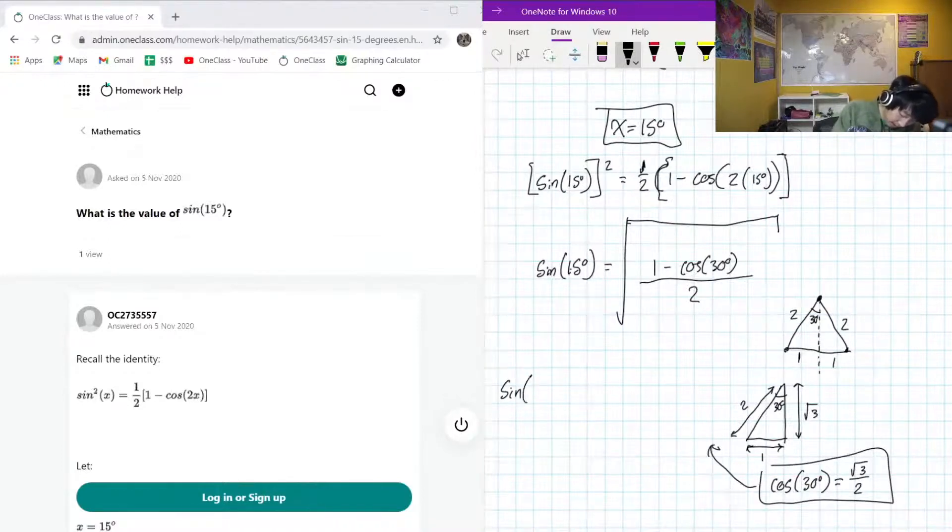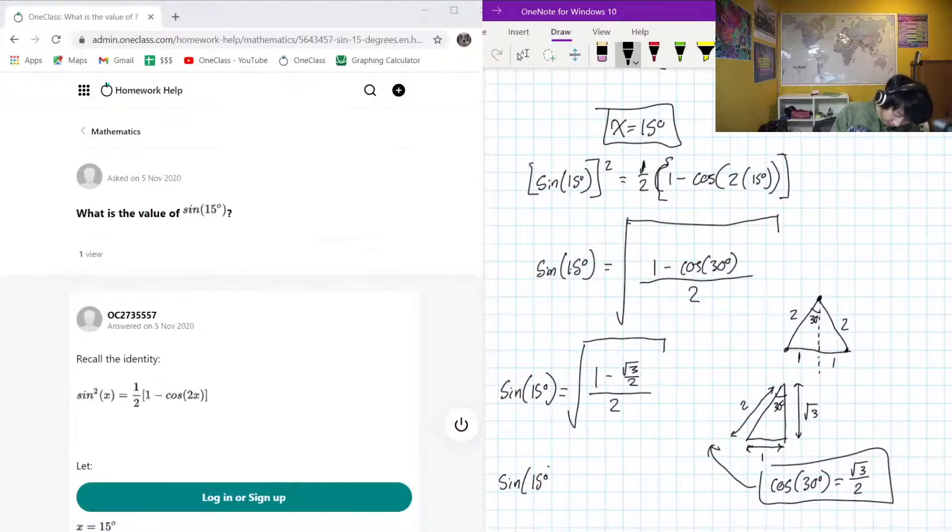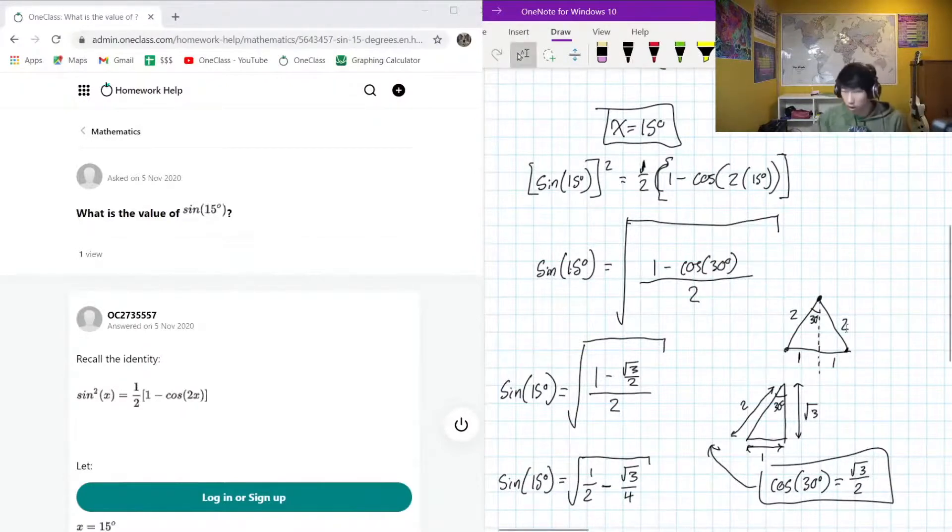So, sine 15 degrees is equal to under the root 1 minus root 3 over 2 all divided by 2. And another way that we could write this is sine 15 is equal to under the root 1 over 2 minus root 3 over 4.